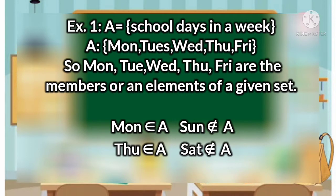Example number one: a set A, or a set of school days in a week. We have Monday, Tuesday, Wednesday, Thursday, and Friday. So Monday, Tuesday, Wednesday, Thursday, and Friday are the members or elements of the given set. Monday is an element of set A, and Thursday is an element of set A. While Sunday and Saturday are not elements of set A, because Sunday and Saturday are rest days of the school week.